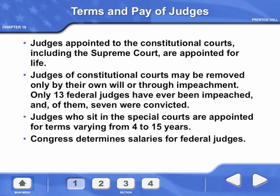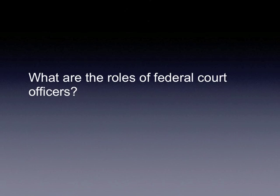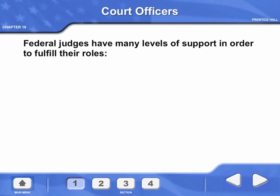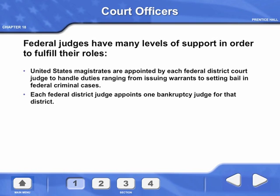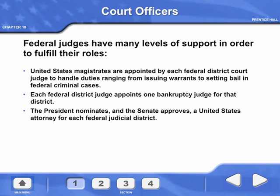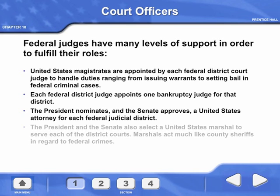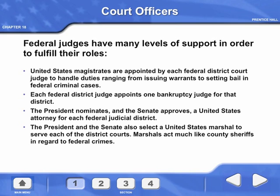Congress determines salaries for federal judges. Federal judges have many levels of support in order to fulfill their roles. United States magistrates are appointed by each federal district court judge to handle duties ranging from issuing warrants to setting bail in federal criminal cases. Each federal district judge appoints one bankruptcy judge for that district. The President nominates and the Senate approves a United States attorney for each federal judicial district. The President and the Senate also select a United States marshal to serve each of the district courts; marshals act much like county sheriffs in regard to federal crimes.